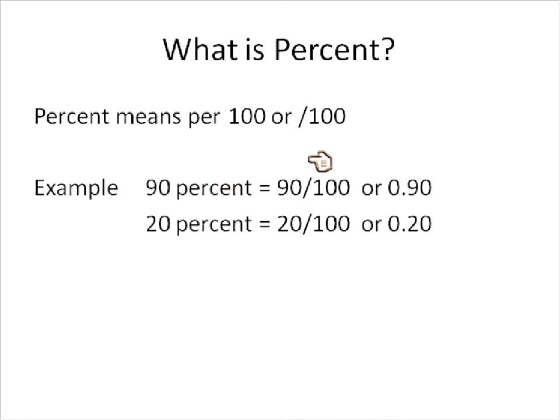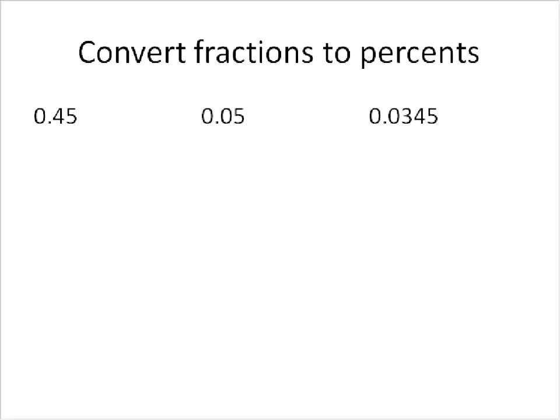So here's a couple examples. To say 90 percent is the same thing as saying 90 out of 100, 90 over 100 or 0.90. 20 percent would be written as 20 over 100 or 0.20. That's essentially what percentages are.